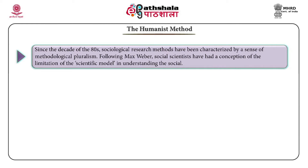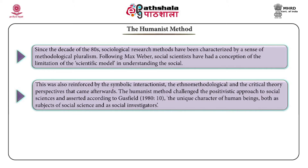Since the decade of the 1980s, sociological research methods have been characterized by a sense of methodological pluralism. Following Max Weber, social scientists have had a conception of the limitation of the scientific model in understanding the social. This was also reinforced by the symbolic interactionist, the ethno-methodological, and the critical theory perspectives that came afterwards. The humanist method challenged the positivistic approach to social sciences and asserted the unique character of human beings, both as subjects of social science and as social investigators.